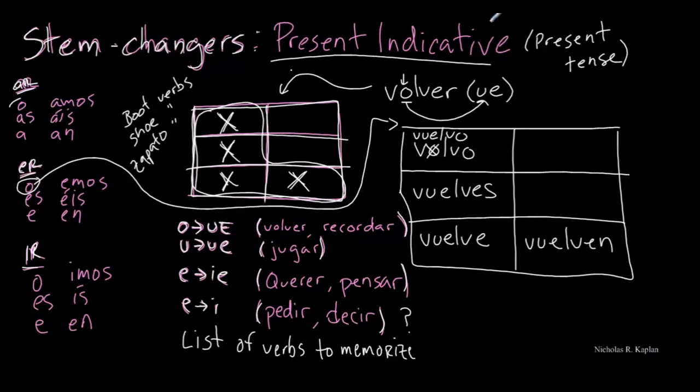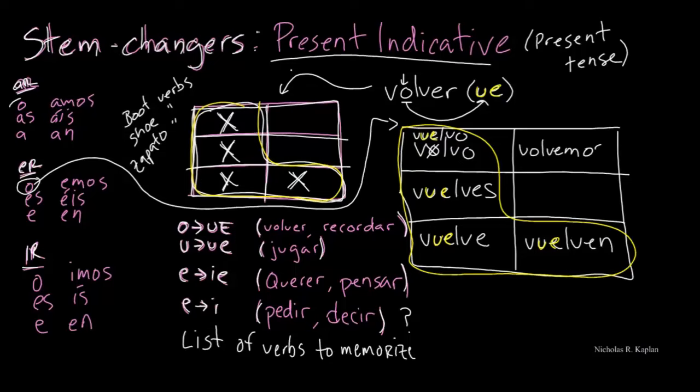And there is that boot that we were talking about. So that stem change, that O to the UE stem change, only occurs in boxes 1, 2, 3, and 6. So when we have the form over here, we use it as normal.